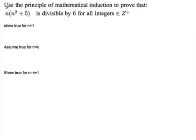Another induction problem. Show that this guy right here, n times n squared plus 5, is always going to be divisible by 6.